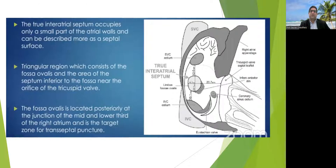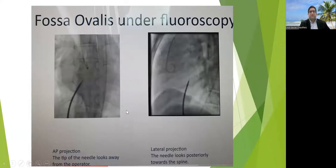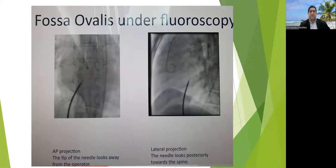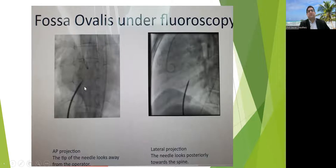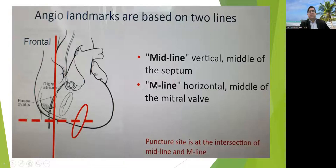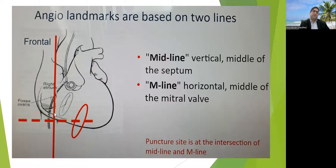RAO is a very important view, especially in distorted anatomy. There are several guidance methods: TEE guidance and the Hung method. Without TEE, in the AP view we place a pigtail in the non-coronary sinus. As we descend we encounter bumps — at the aorta, and the third bump corresponds to our target. In AP view the needle should be one space below the pigtail and on the right side of the spine. In the lateral projection it appears slightly posterior toward the spine but not totally — a bit about the midline. The M-line is a horizontal line through the middle of the mitral valve, and the puncture site is at the intersection of the midline and the M-line.